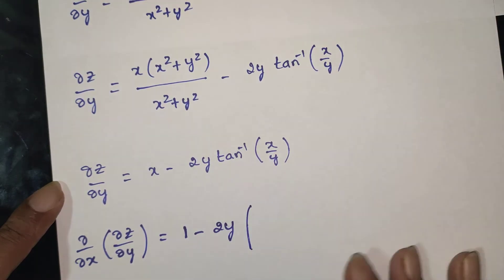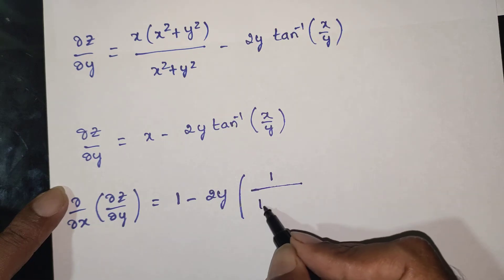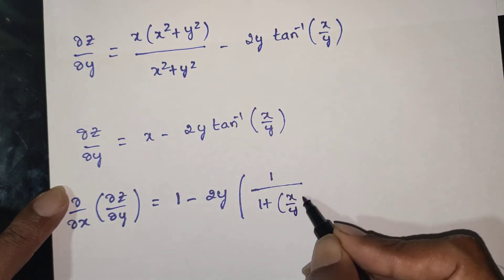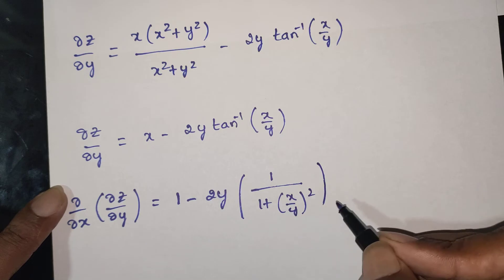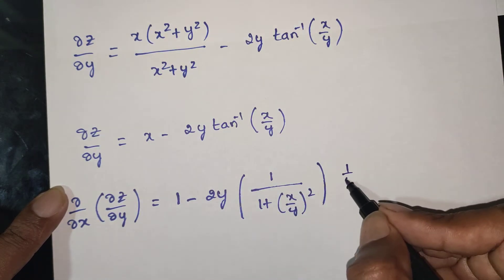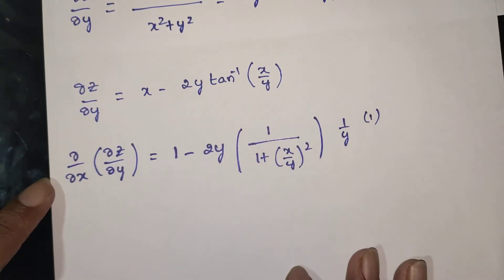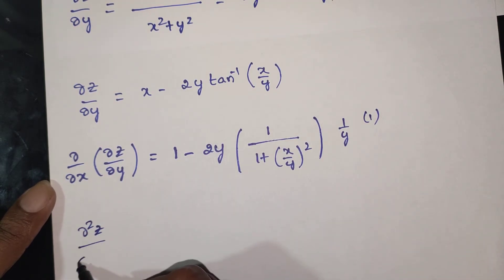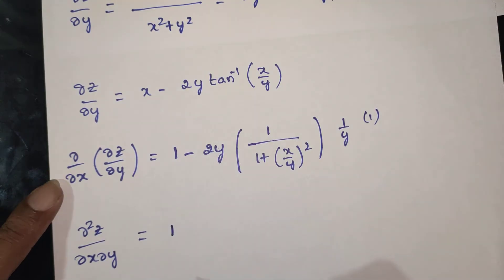Now differentiating with respect to x to find dou square z by dou x dou y. The constant terms with respect to x are noted. We apply 1 by 1 plus x by y whole square, with 1 by y as constant, and x differentiation gives 1. So dou square z by dou x dou y is equal to 1 minus...